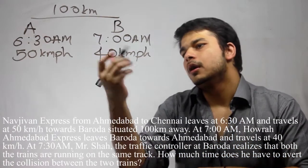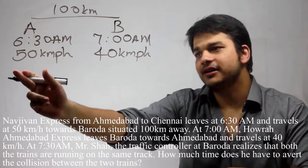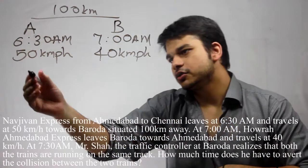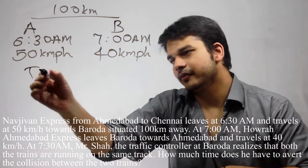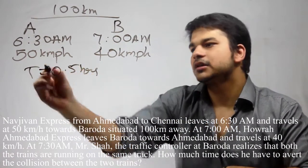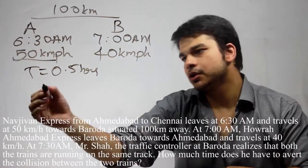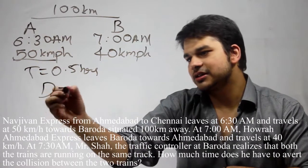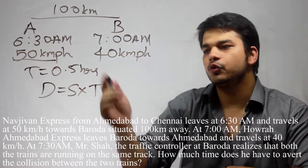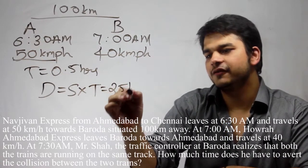Let us first calculate the distance covered by the first train in half an hour. Time is 0.5 hours, speed is 50 km/h, so distance is speed multiplied by time, which is 50 × 0.5 = 25 km.